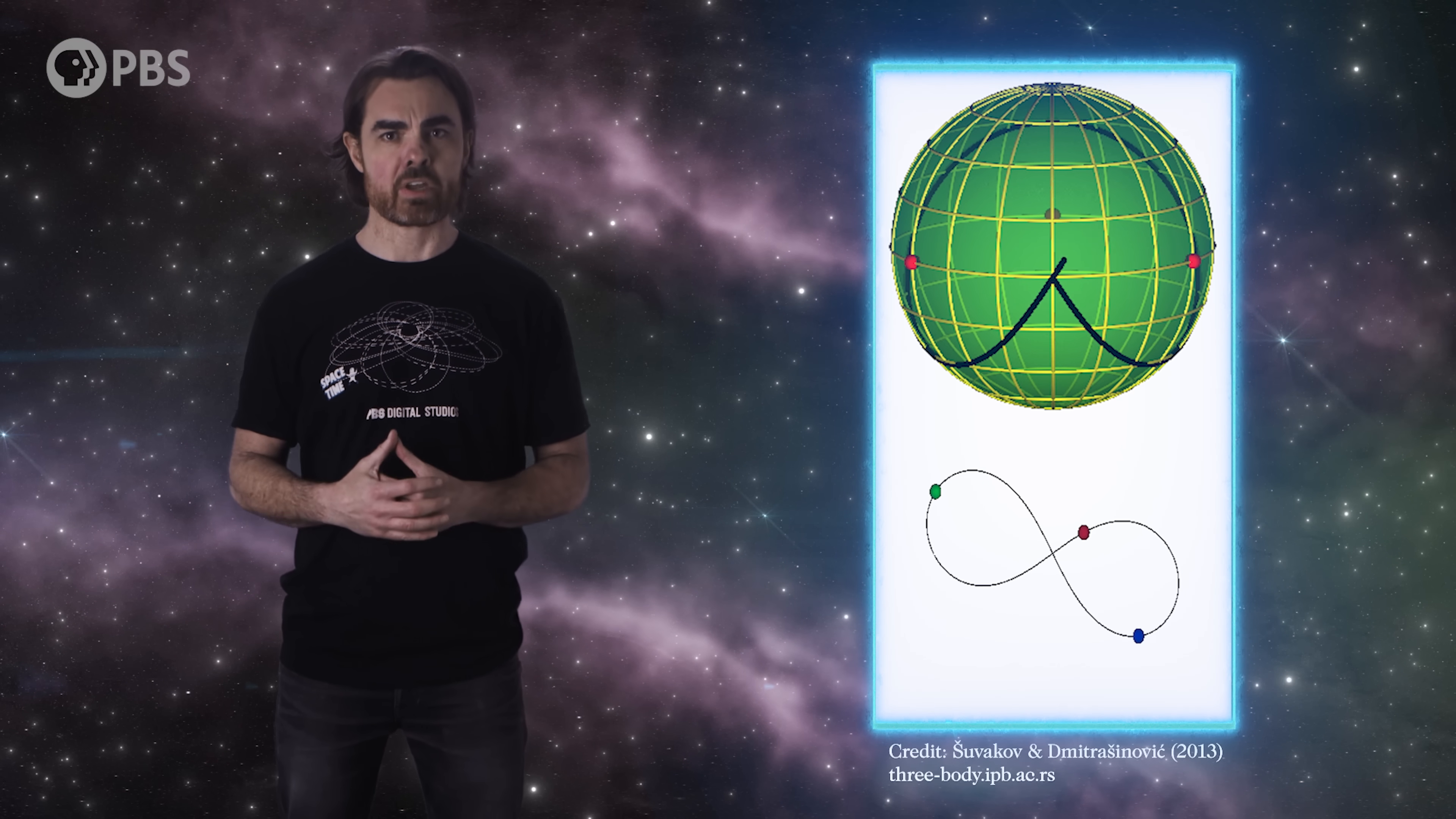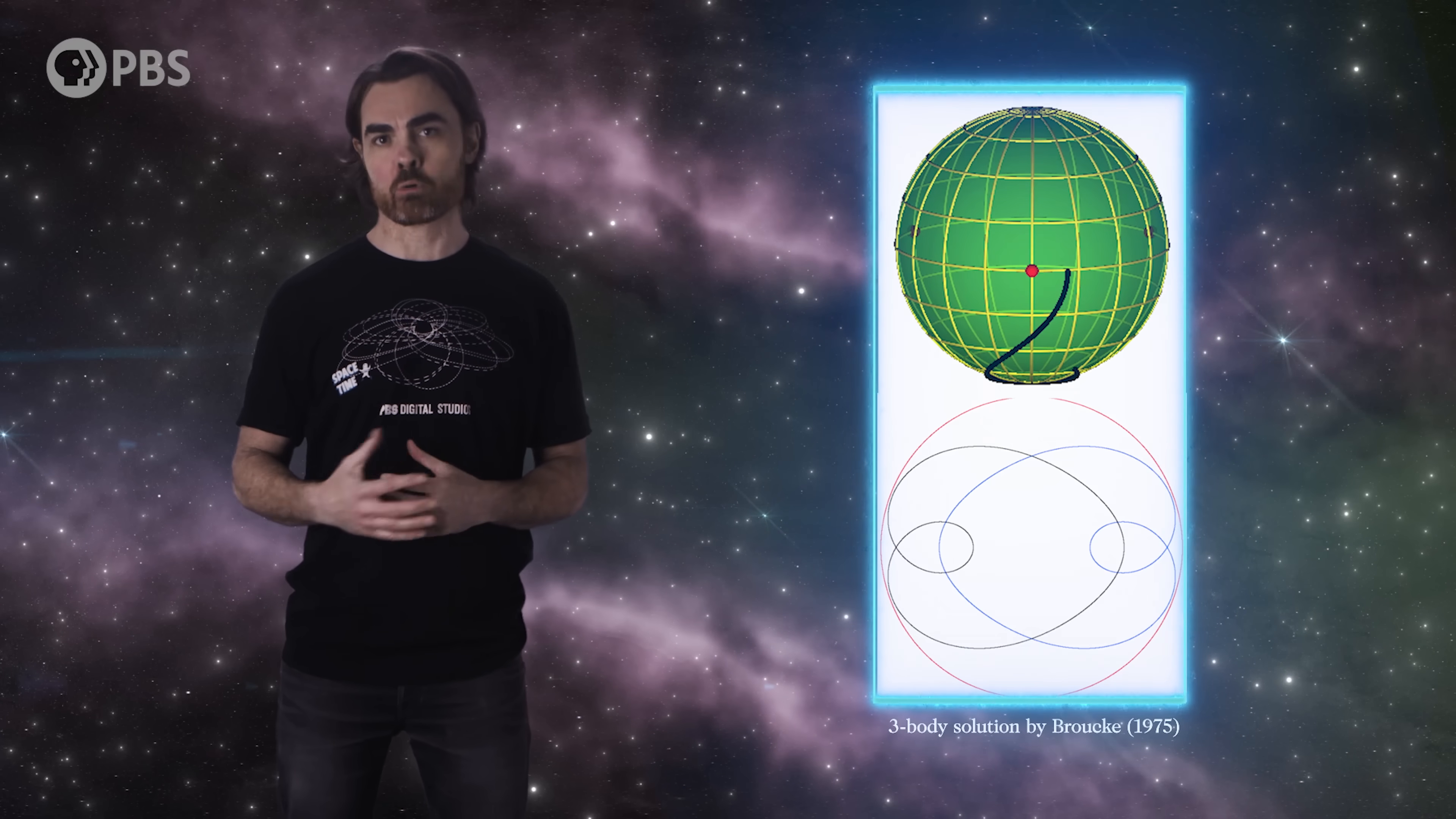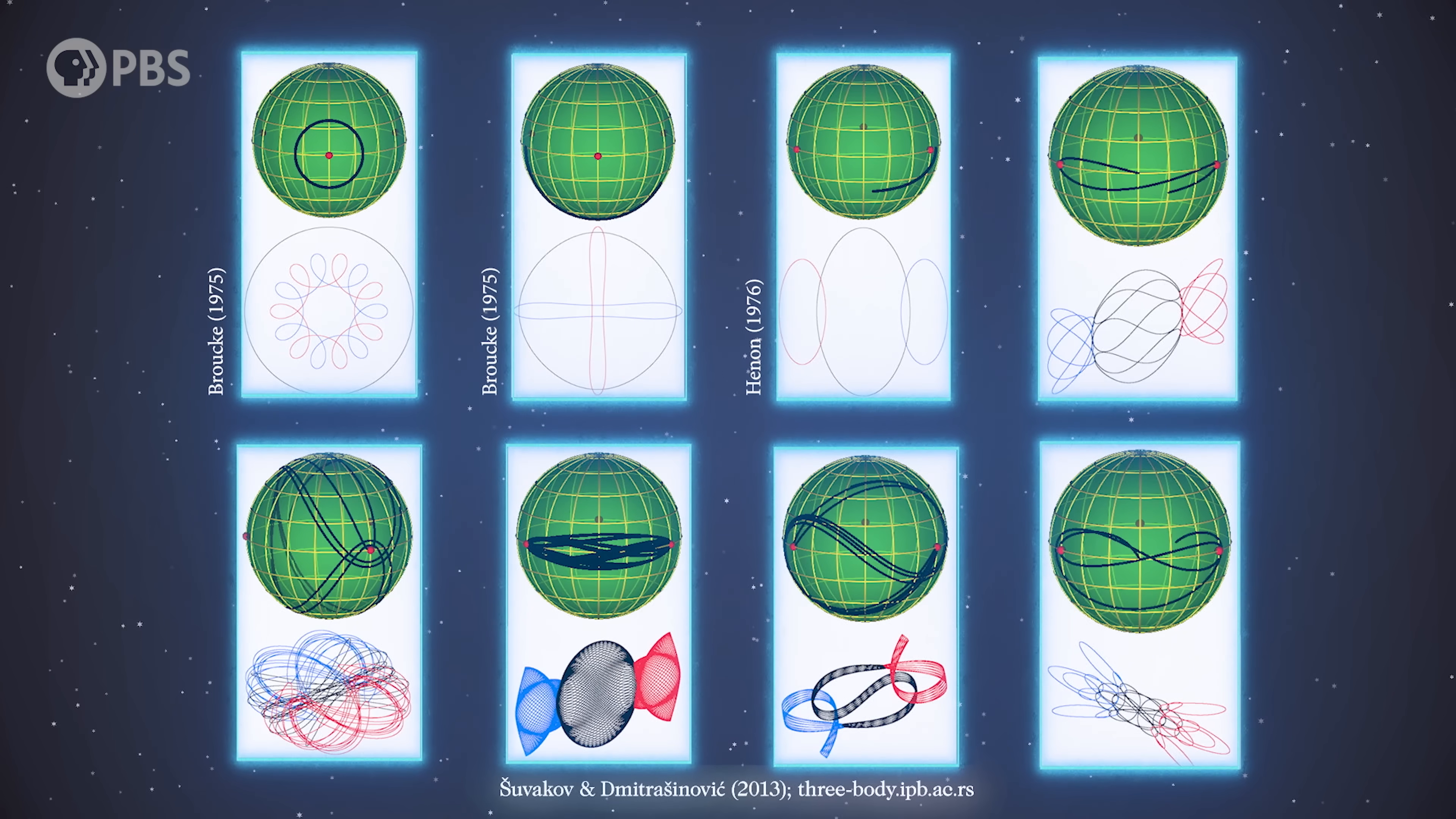Now, we map that information on the surface of a sphere. We only need the 2D surface because if we know two internal angles of the triangle, we also know the third. So the equator of the sphere represents both angles being zero. That's a fully collapsed triangle. The three bodies are in a straight line, as in Euler's solution. The poles are equilateral triangles, so Lagrange's solution. All other orbits move on this sphere as the triangle defined by the orbits evolves.